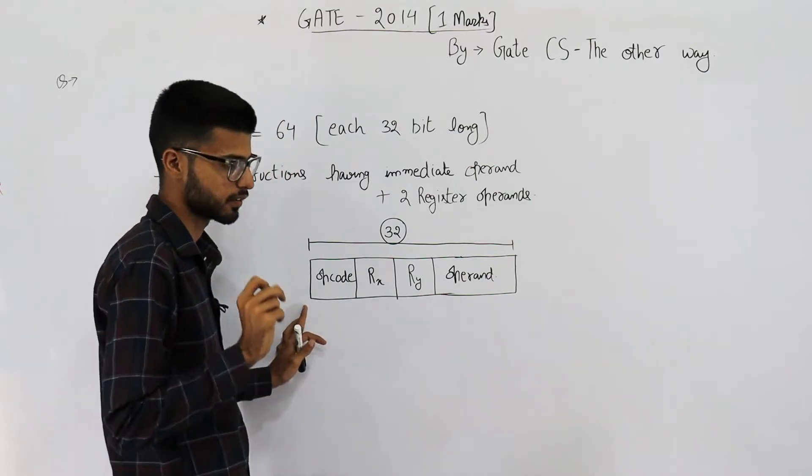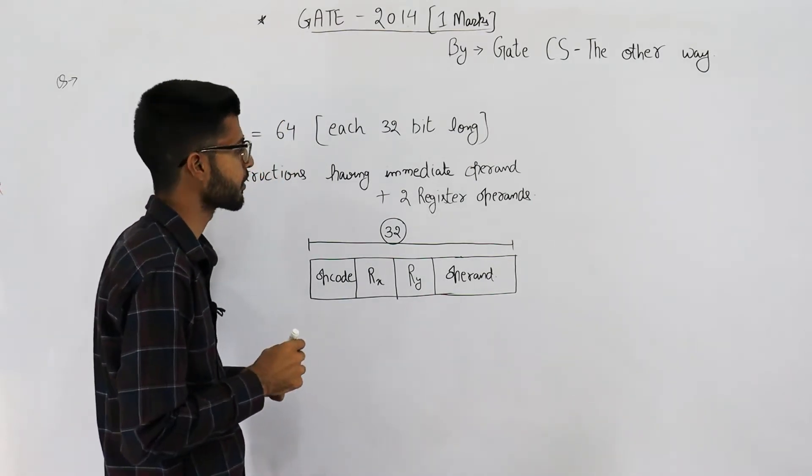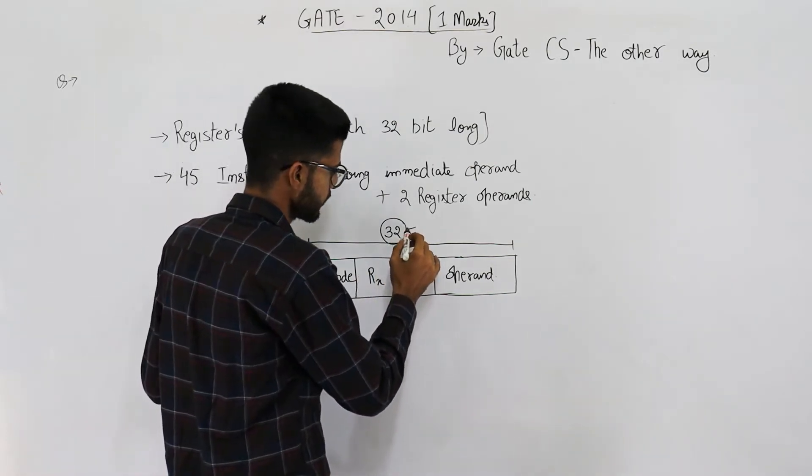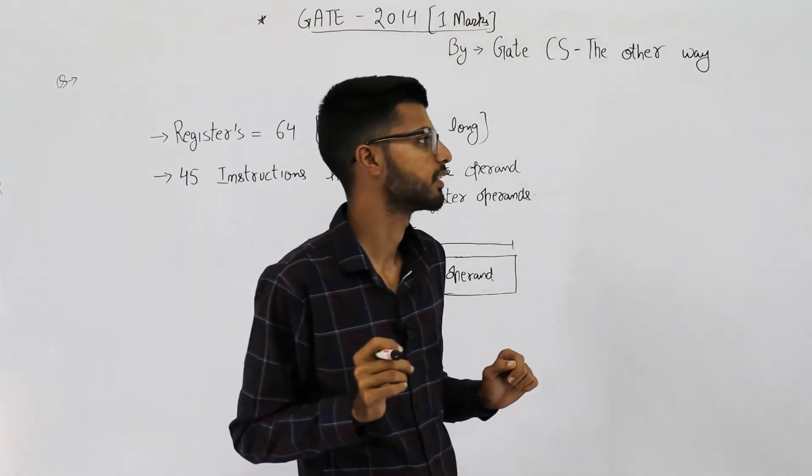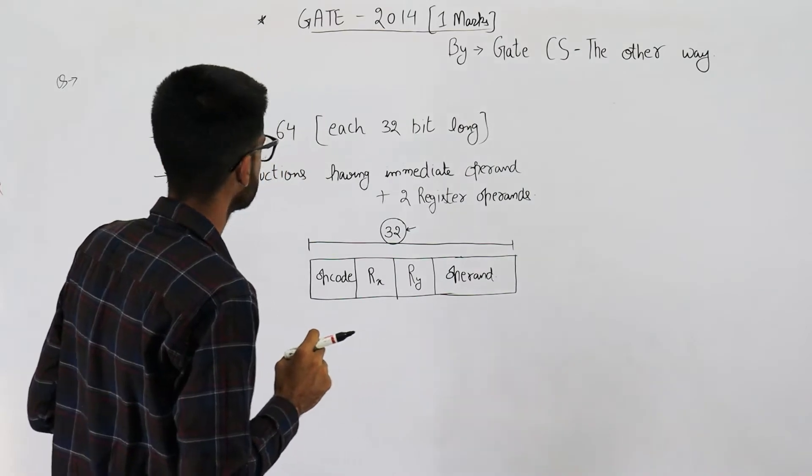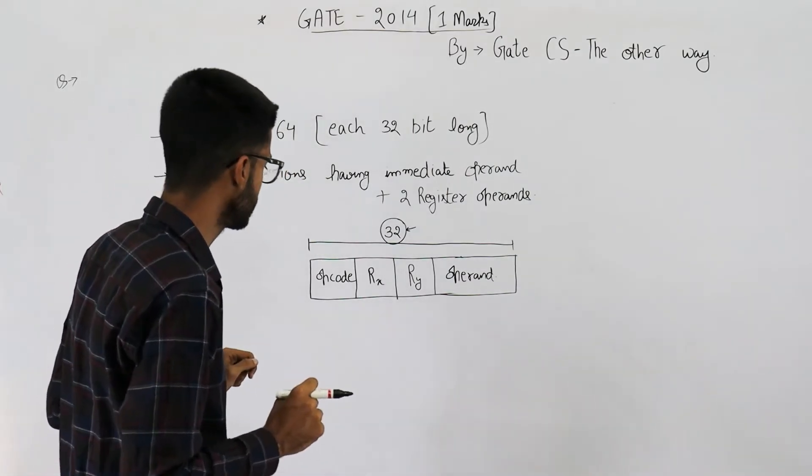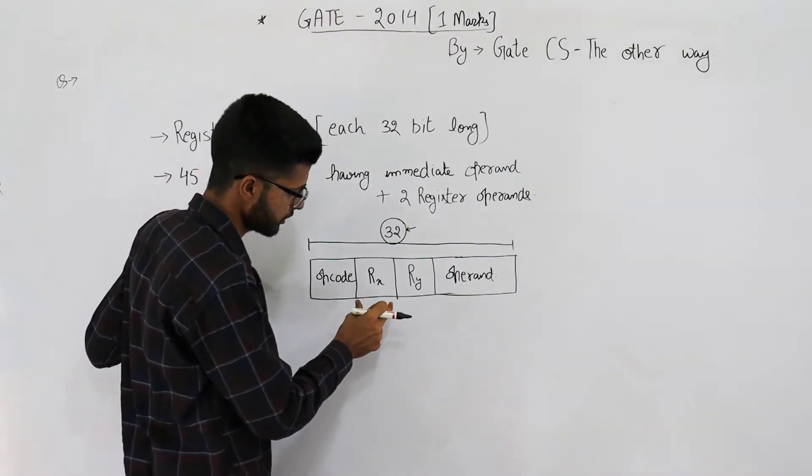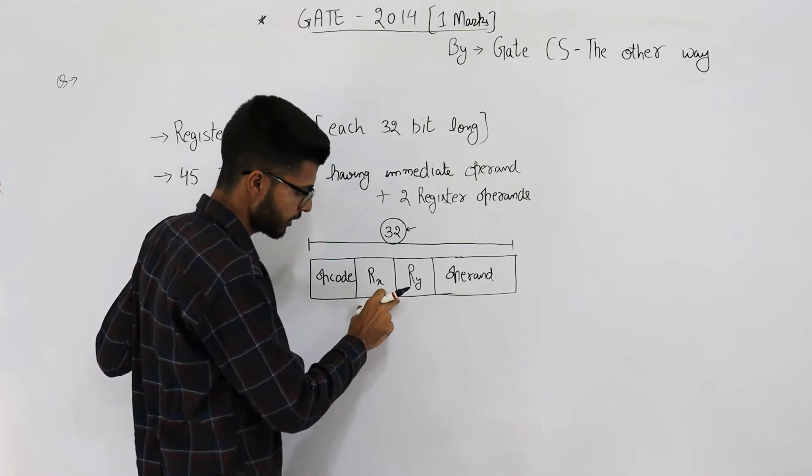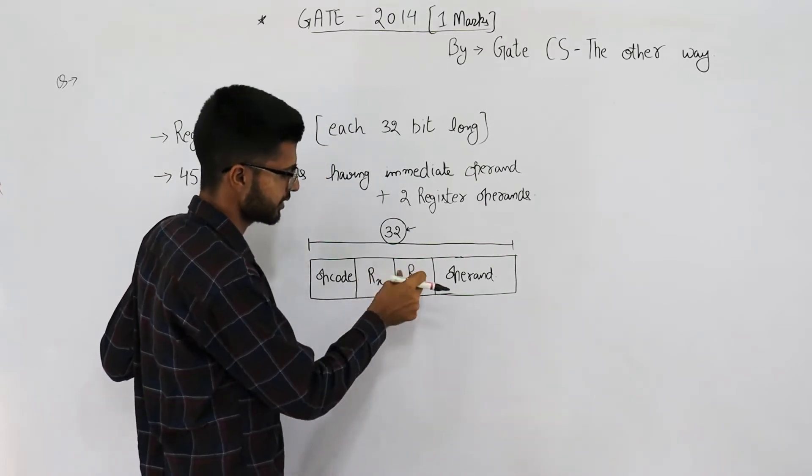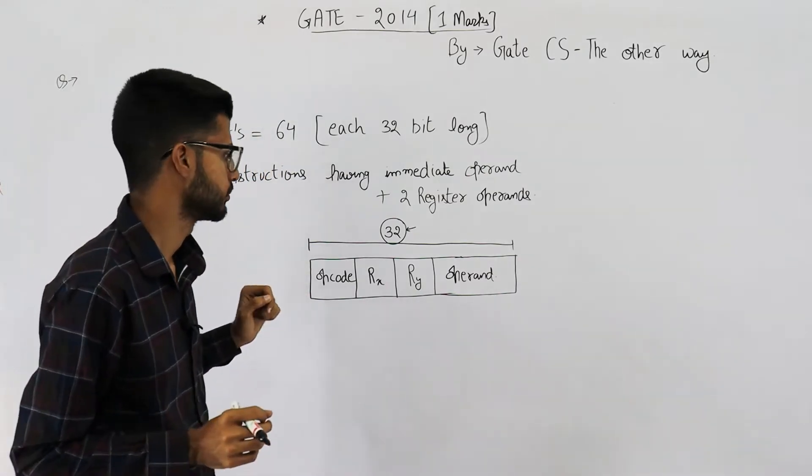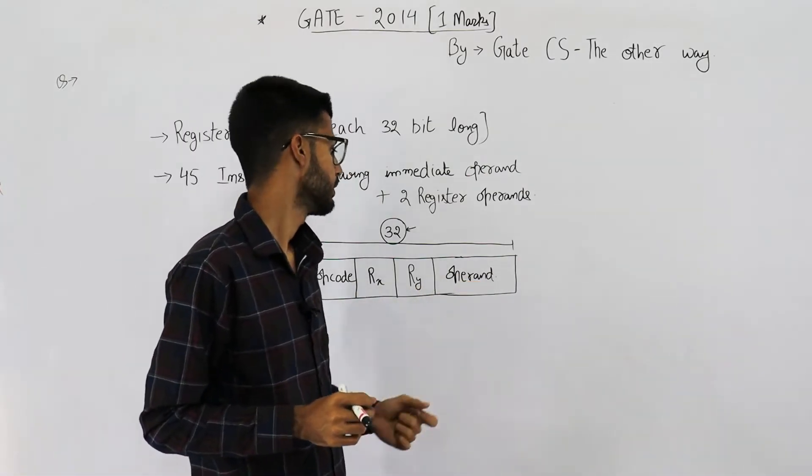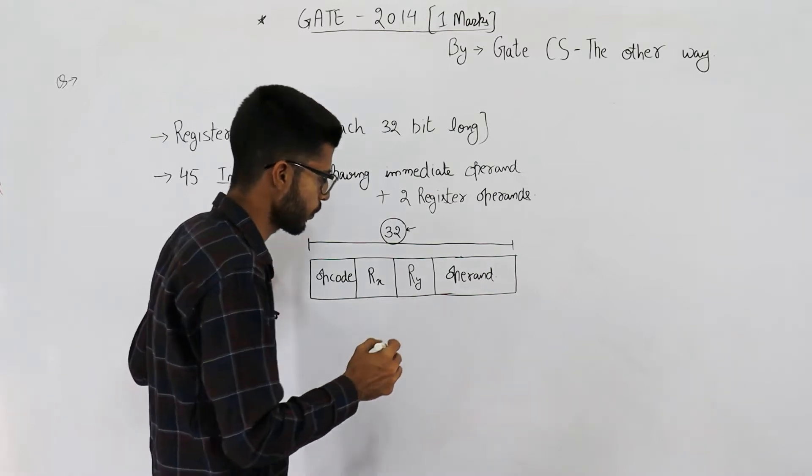Next thing, they are saying the instruction has two register operands, that means register X and register Y, and an immediate operand. Now we need to find what is the maximum value that could be represented with these operand bits.